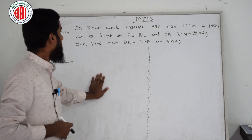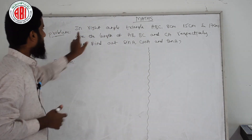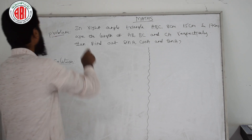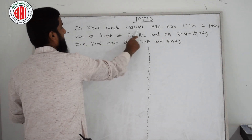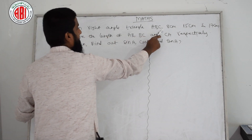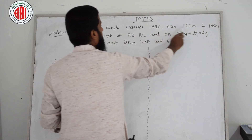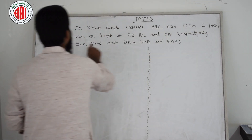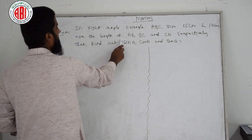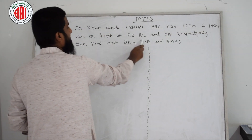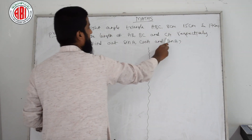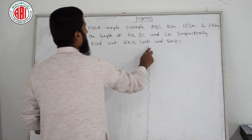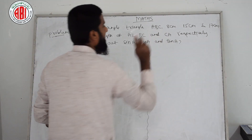You can see the question on the board. I am reading the question: In right angle triangle ABC, 8 cm, 15 cm, and 17 cm are the lengths of AB, BC, and CA respectively. Then find sin A, cos A, and tan A.